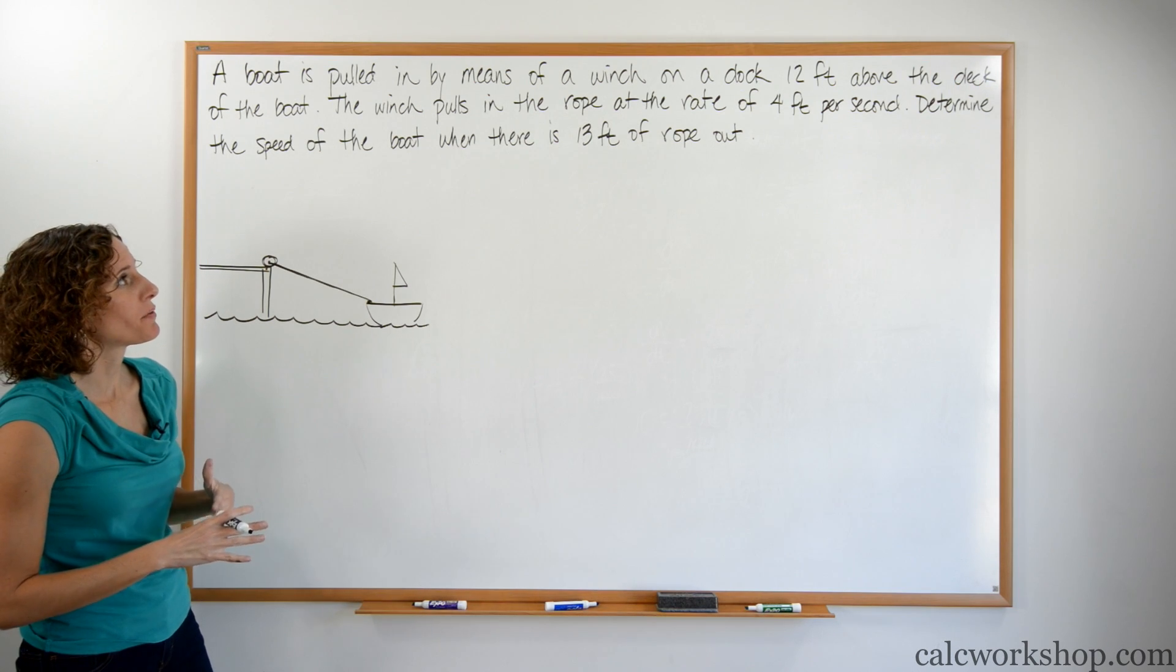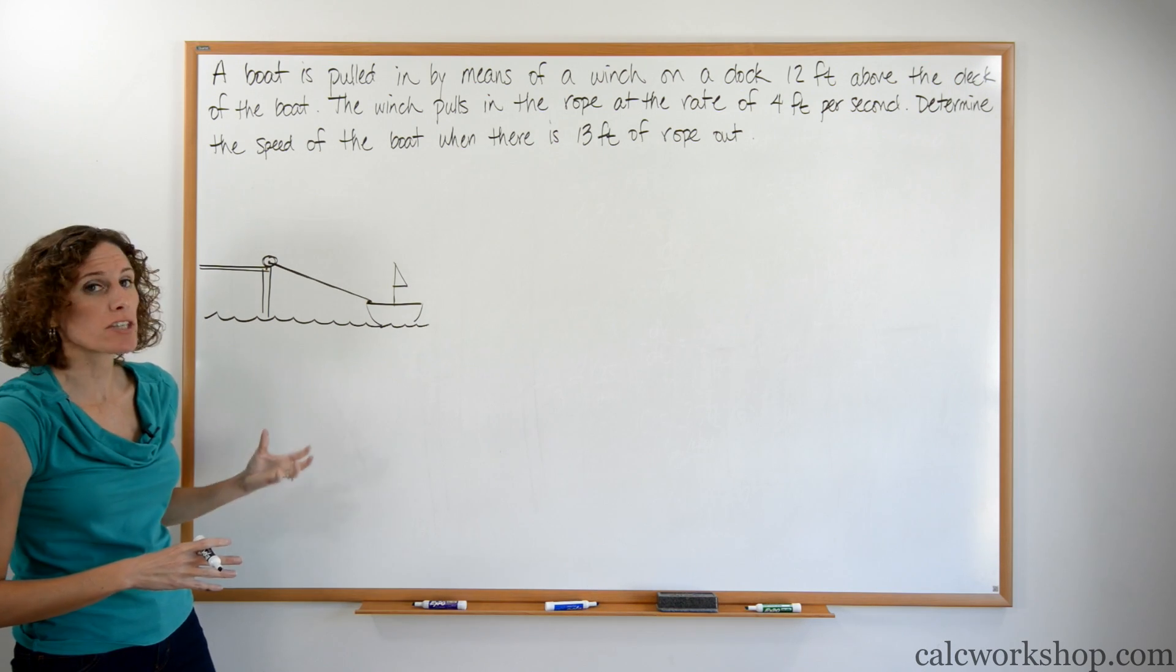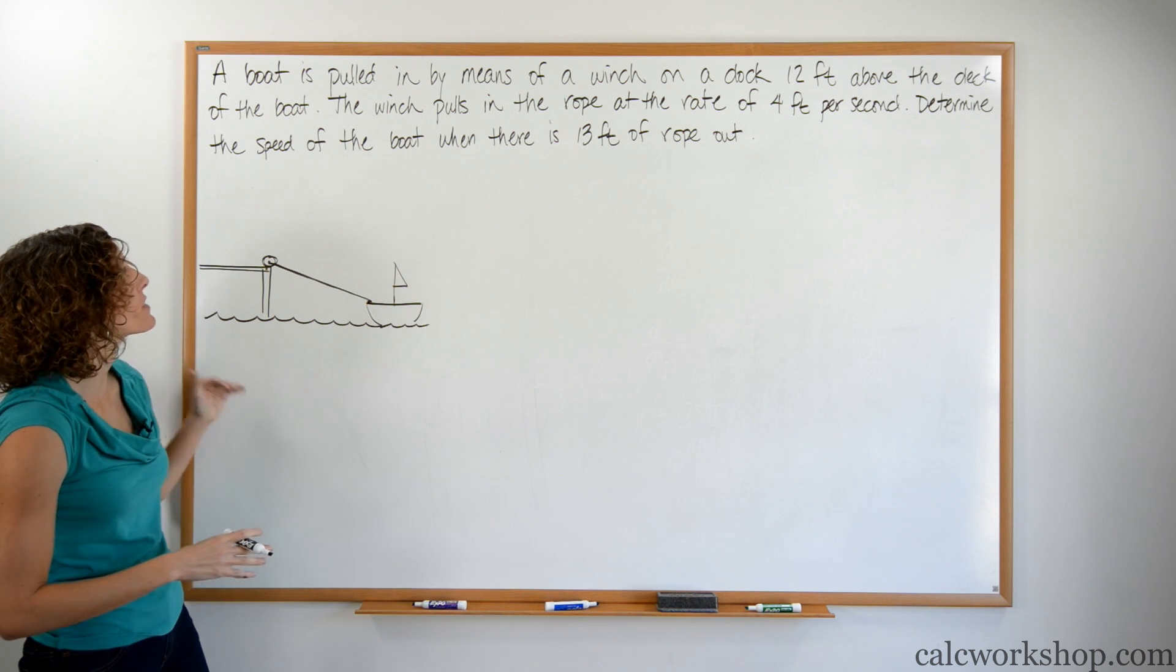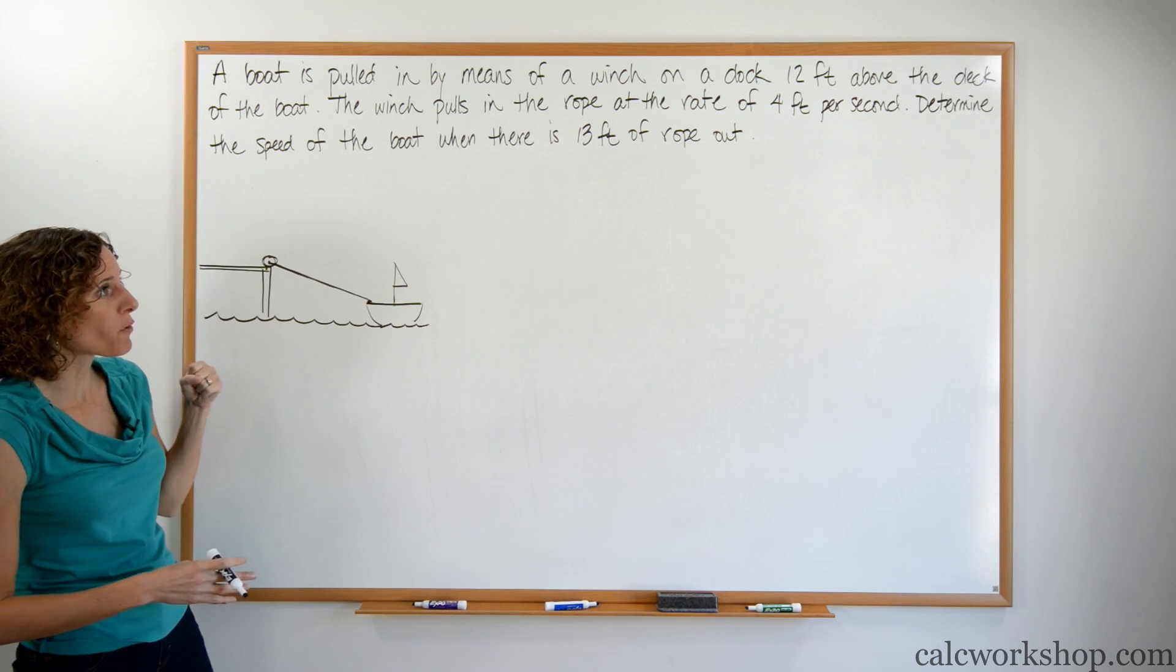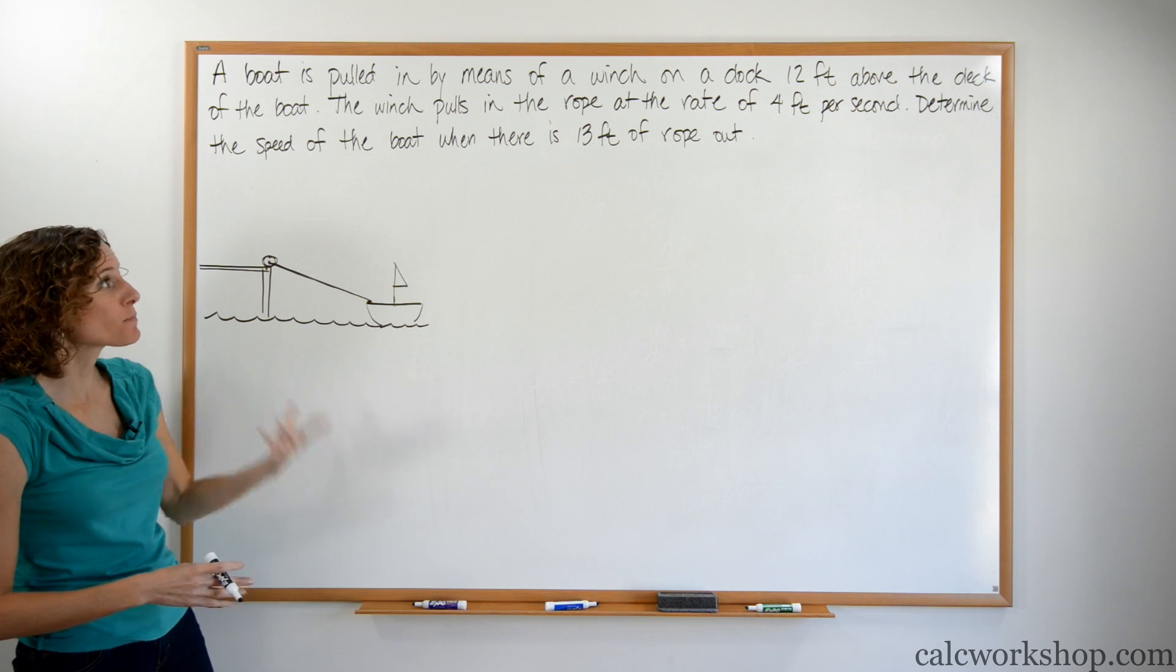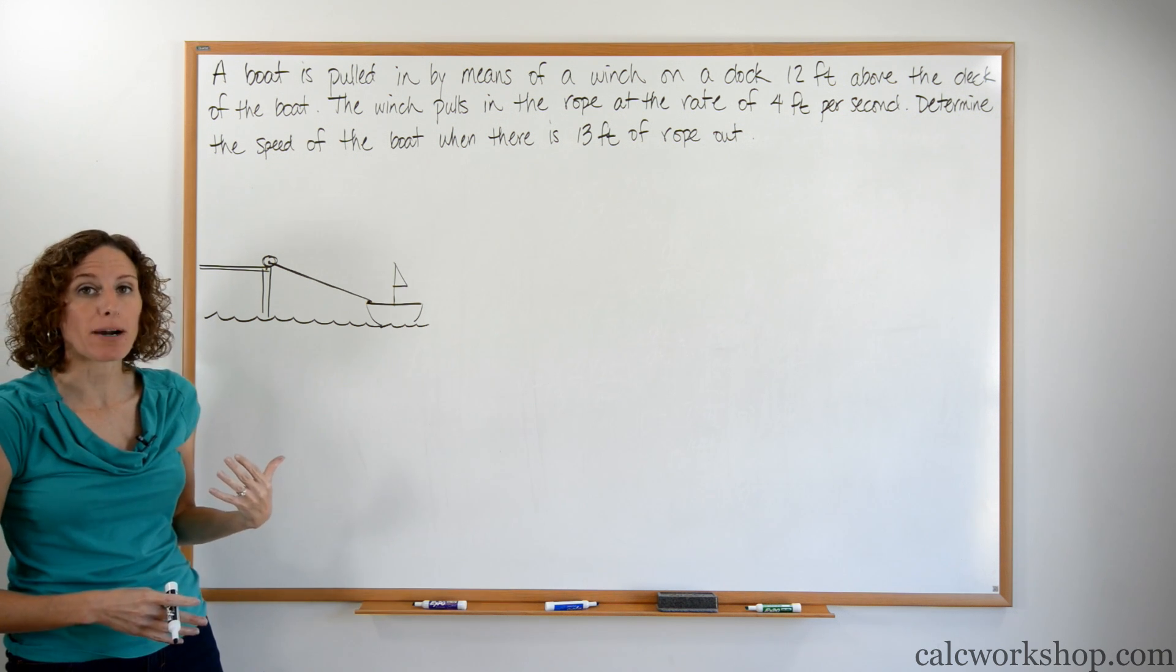A boat is pulled in by means of a winch on a dock 12 feet above the deck of the boat. The winch pulls the rope at the rate of 4 feet per second. Determine the speed of the boat when there is 13 feet of rope out.